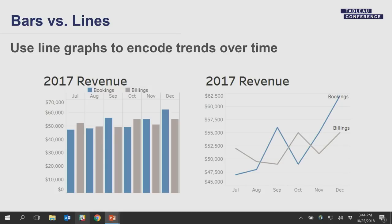As much as I love the bar chart, there are times when it's the wrong chart type to use. If we're looking at revenue over time broken down by bookings and billings, the thickness and height of the bars obscures the pattern in the data. But when I use a trend line, you can really see how they track against each other — much clearer. With that said, lines only work well with time, not other dimensions.